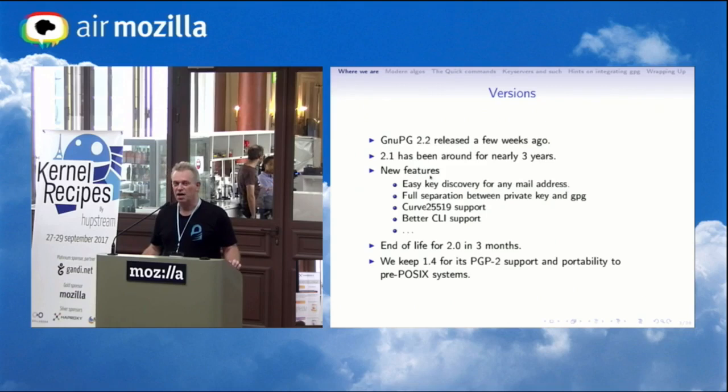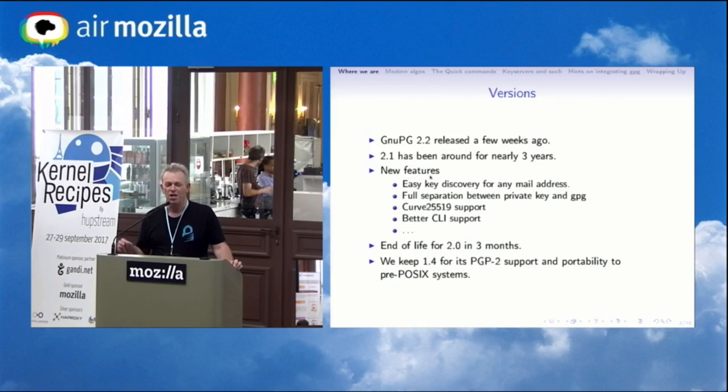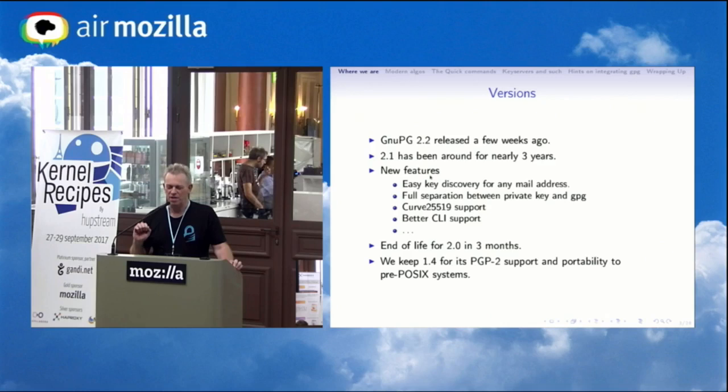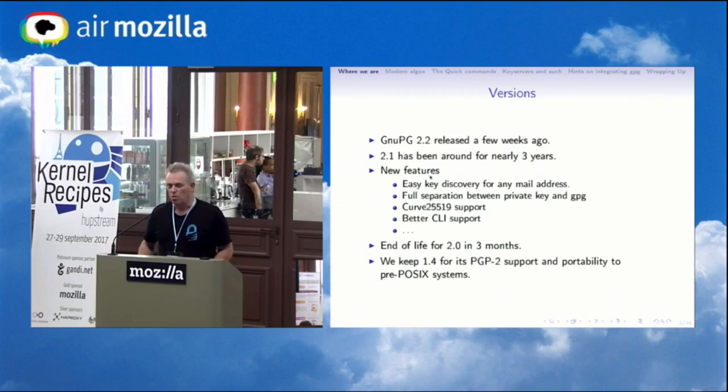Back to the current version, which is 2.2. The main features are that we now have a thing called easy key discovery. This works if you encrypt to someone using a mail address — no key ID or fingerprint — and you don't have that key in your local key ring. It will go out through a web server and ask for the key, and what you get back is the authentic key for that mail address. You will always be sure this is the key matching the mail address, though whether you can trust it is a different story.